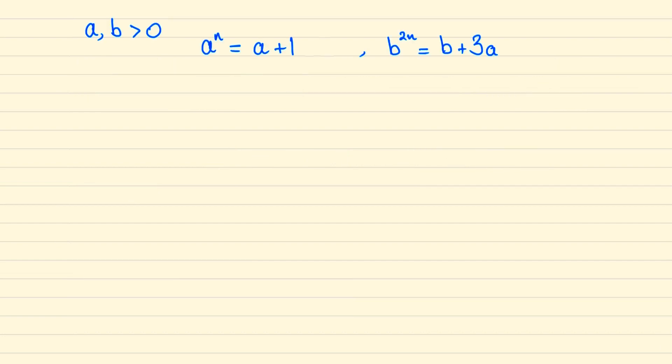To begin this problem we'll first notice that since a and b are positive, a plus one must be greater than one, and therefore since a to the power of n is greater than one, it follows that a must be bigger than one.